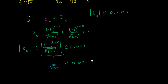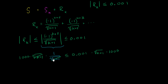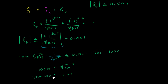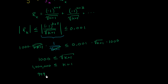We can multiply both sides by the square root of k plus one to clear the denominator, and multiply both sides by 1,000 to get one on the right-hand side. We end up with 1,000 less than or equal to the square root of k plus one. Squaring both sides gives 1,000,000 less than or equal to k plus one. Subtracting one from both sides gives 999,999 less than or equal to k.